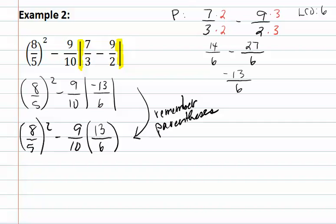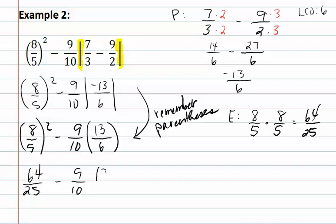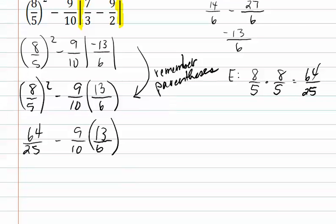Now, we are done with the P or parenthesis step, so we move on to the E or exponent step. We have 8 fifths squared, which is 8 fifths times 8 fifths, which gives us 64 twenty-fifths, and we place this below. And then, we bring everything else down. Now, we are done with exponents, so we move on to the multiply and divide step.